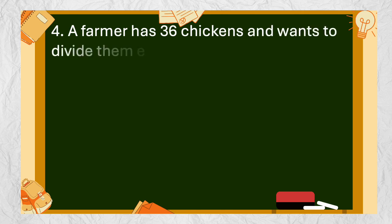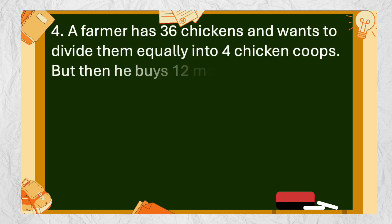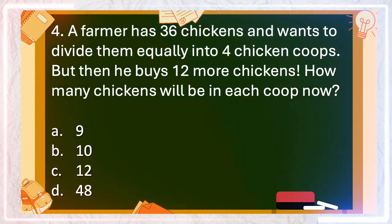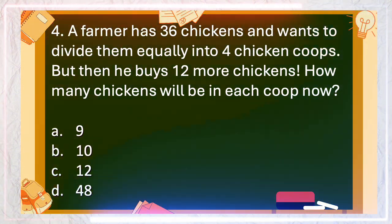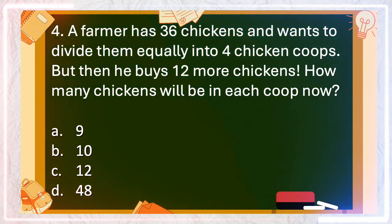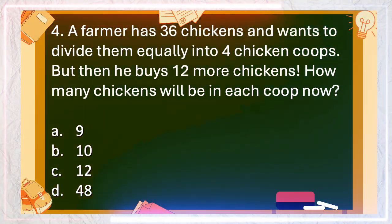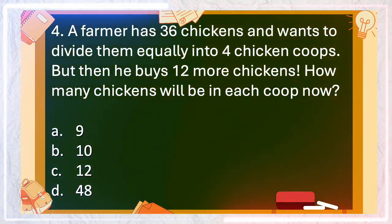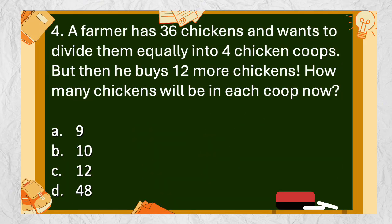Number 4: A farmer has 36 chickens and wants to divide them equally into 4 chicken coops. But then he buys 12 more chickens. How many chickens will be in each coop now? A. 9, B. 10, C. 12, D. 48. The answer is C. 12.